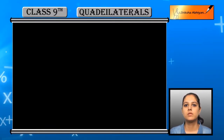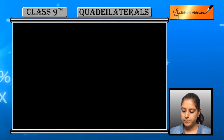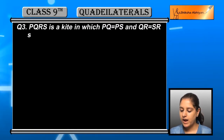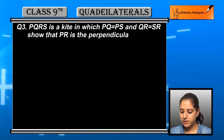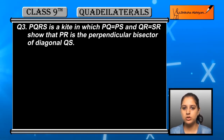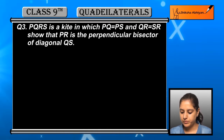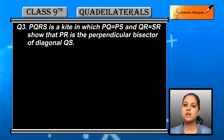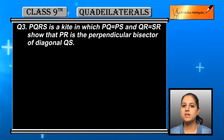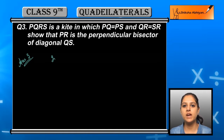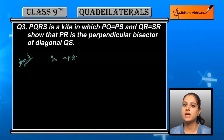The next question: PQRS is a kite in which PQ is equal to PS and QR is equal to SR. Show that PR is the perpendicular bisector of diagonal QS. Given PQ = PS and QR = SR, we need to show that diagonal PR is the perpendicular bisector of QS — meaning it cuts QS at 90 degrees and divides it into equal parts.